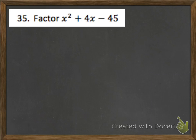Problem 35 wants us to factor the expression x squared plus 4x minus 45. To do this, we're going to use the box method. In my box, I know I can put x squared in the top left and negative 45 in the bottom right.